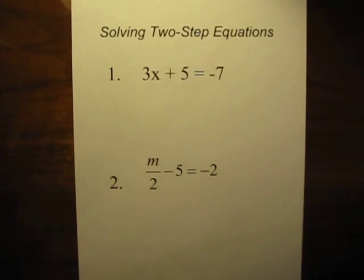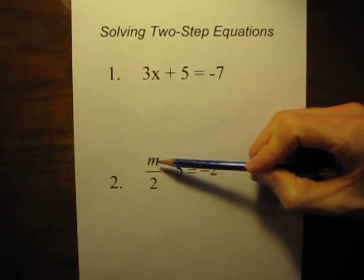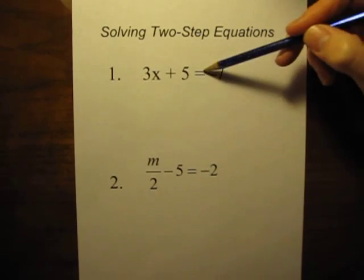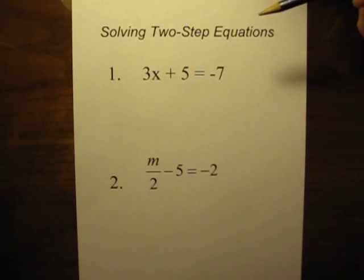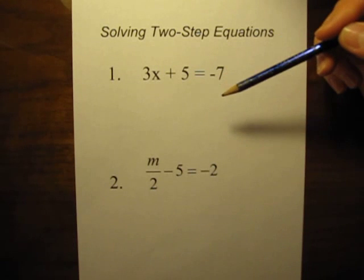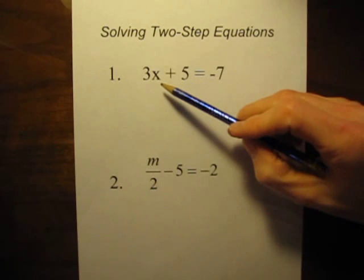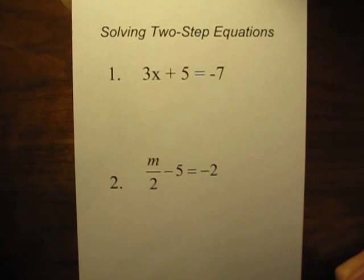In this video we are going to be looking at how to solve two-step equations. We have a variable — in this case x, or down here the variable is m — and we want to get it by itself so we know what that variable equals. These are equations that we are solving to figure out what the variable equals in each case. As the name suggests, we are going to have to do two separate steps to get the variable by itself. In number one we have to get rid of the three and we have to get rid of the five — those are the two steps.